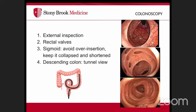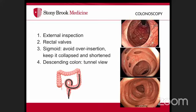The sigmoid colon is often the most difficult segment to traverse due to tortuosity and variable mobility. The scope can loop here, making advancement challenging. Avoid hooking the scope and over-insufflating. Keep the sigmoid collapsed and shortened, maintain the lumen in the center, and be careful to distinguish diverticula from the true lumen.